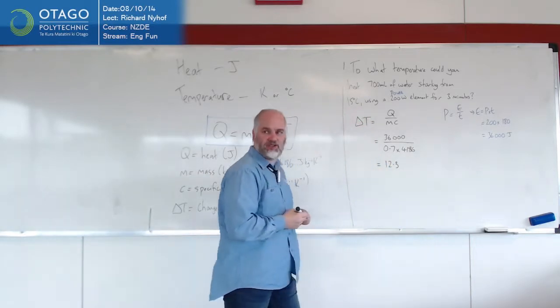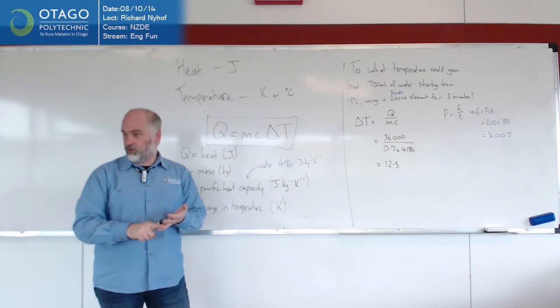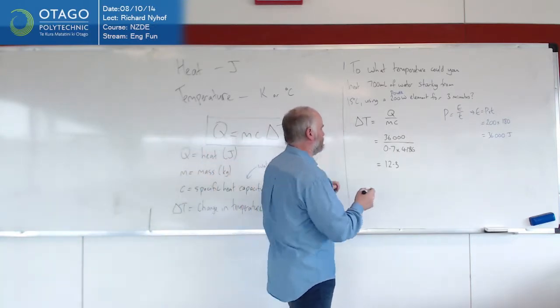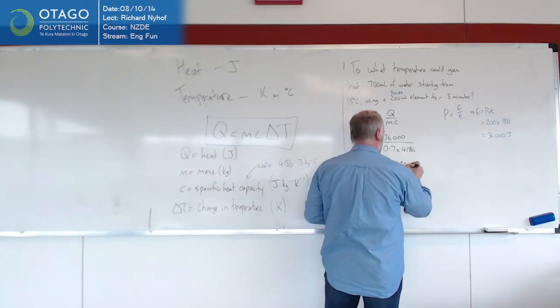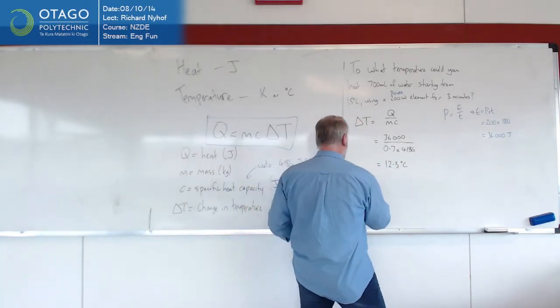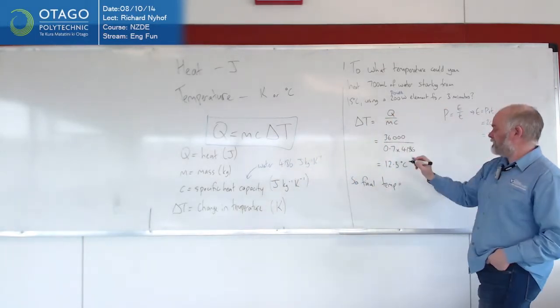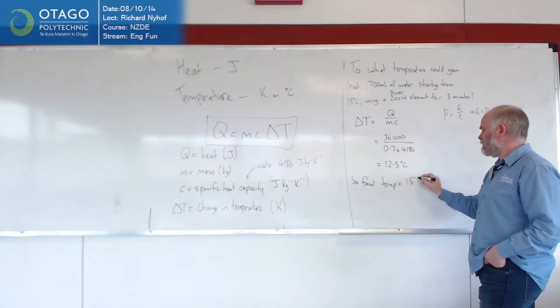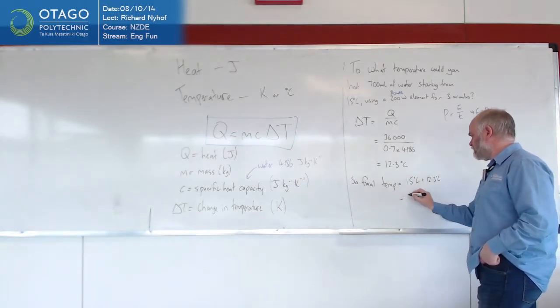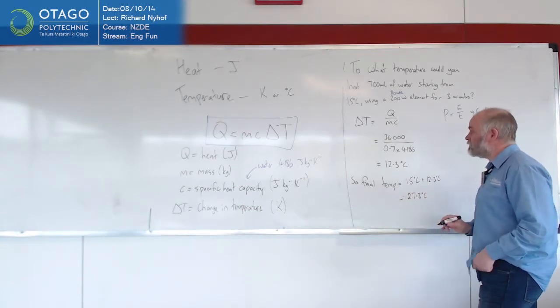And again, because that's a change in temperature, it doesn't matter whether you're thinking Kelvin or degrees Celsius, because the intervals are the same. So given that this was a degrees Celsius thing, we'll put that one to degrees Celsius as well. So the final temperature is my 15 that we started off with, plus the 12 that we're increasing it, is 27.3 degrees Celsius.